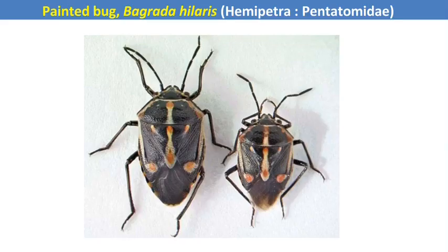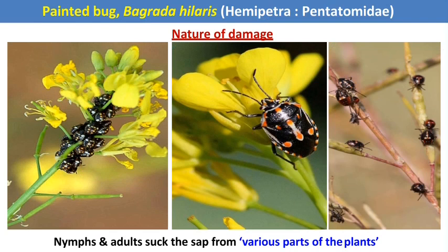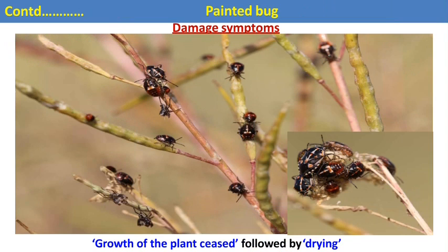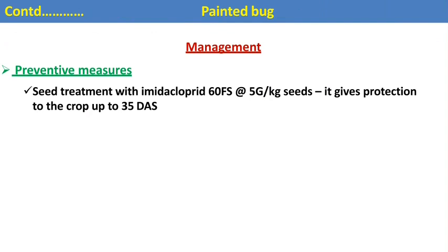The next pest is the painted bug, Bagrada hilaris. It is a Hemipteran pest, hence both nymphs and adults are the damaging stages. Both nymphs and adults suck cell sap from all tender plant parts of mustard. As a result, the leaves and all tender plant parts become wilted and dry, and the plant becomes stunted. In this picture you can see the plant's growth is stunted, followed by drying due to the feeding of nymphs and adults of the painted bug. For control, spray the crop with imidacloprid or seed treatment with imidacloprid, an effective systemic insecticide.